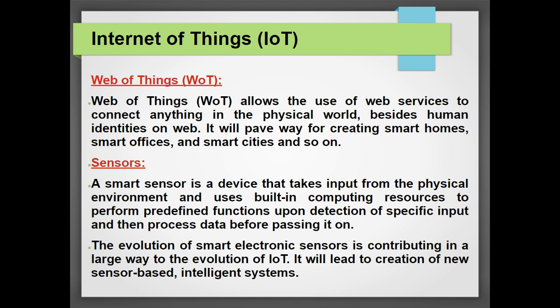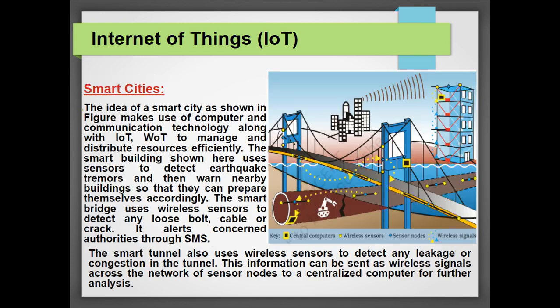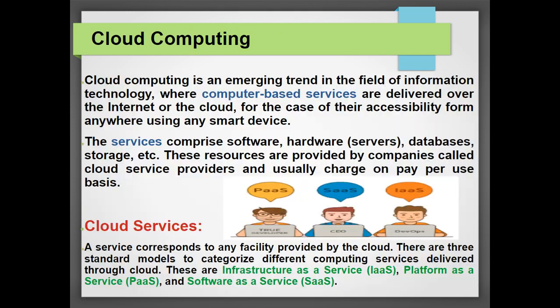A smart sensor is the prime component of any artificial intelligence. It is a device that takes input from the physical environment and uses built-in computing resources to perform predefined functions upon detection of specific input, and then processes data before passing it on. There are many different kinds of sensors. Now we are coming to the present topic, which is cloud computing.